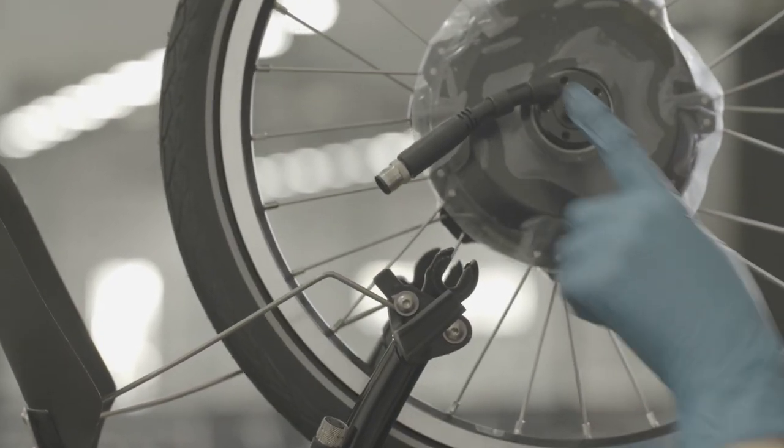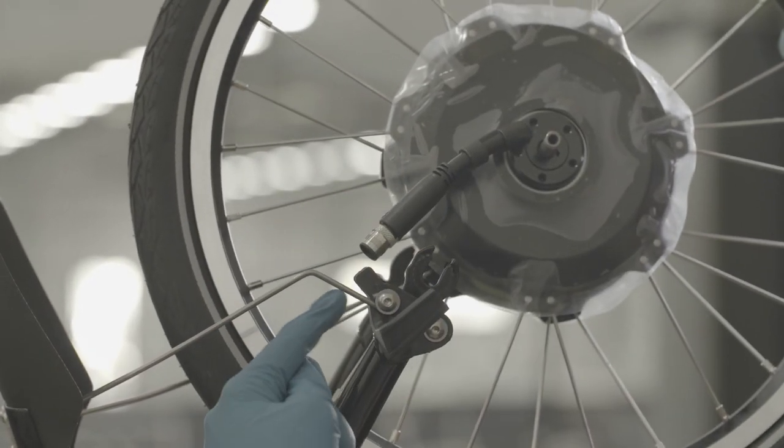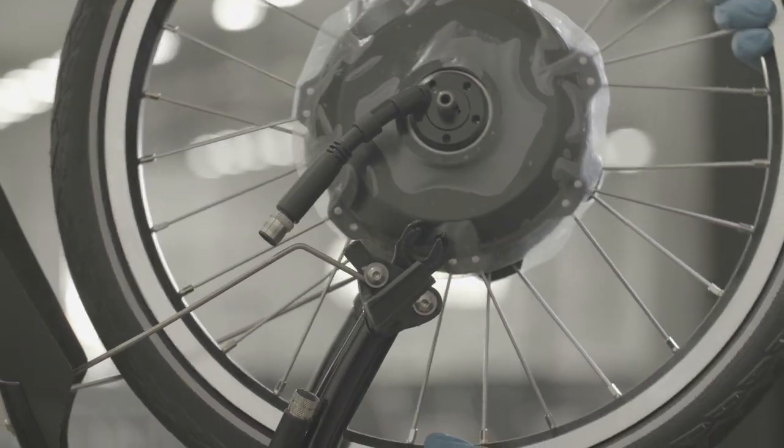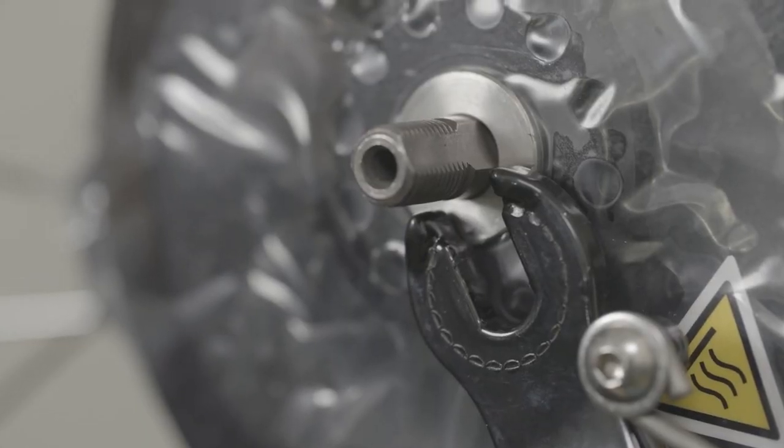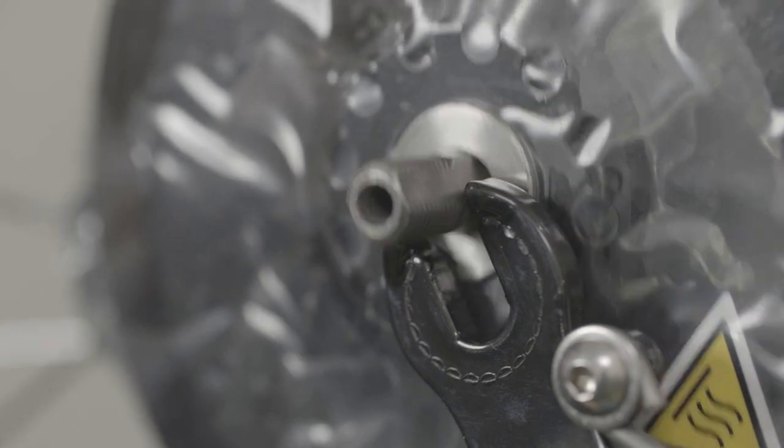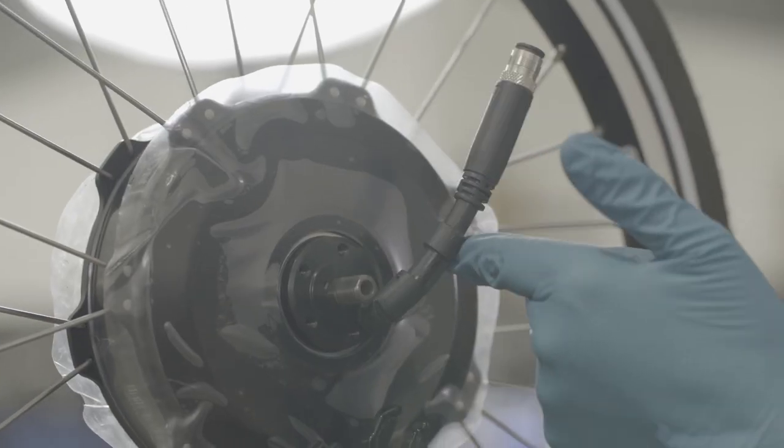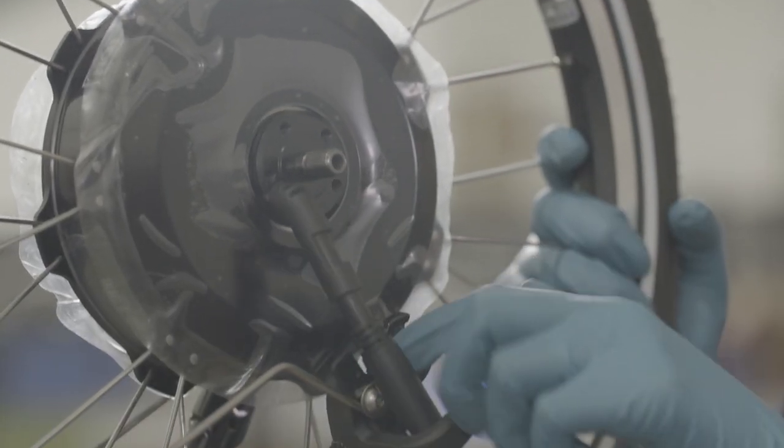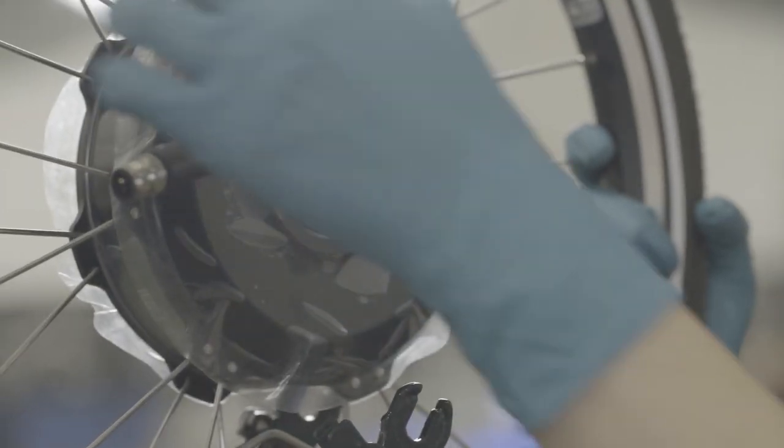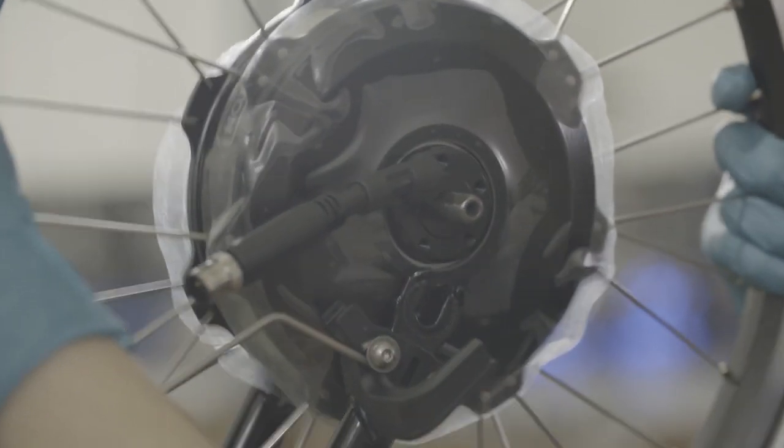Ensure that the wheel is the correct orientation with the motor cable on the left-hand side of the fork, next to the plastic hook. The axle has two flat edges that line up with the dropouts of the fork. The cable can only be rotated clockwise. Make sure it's in the right position before you fit the wheel.